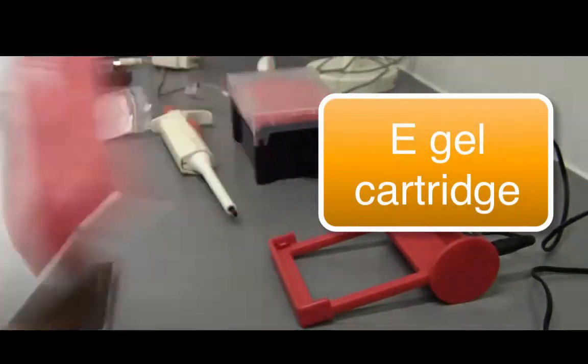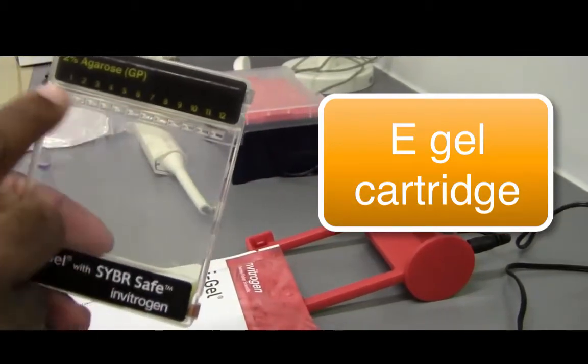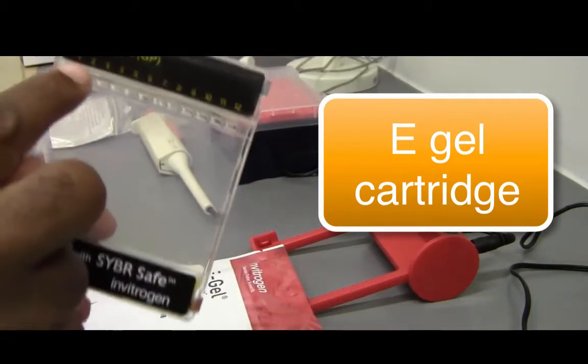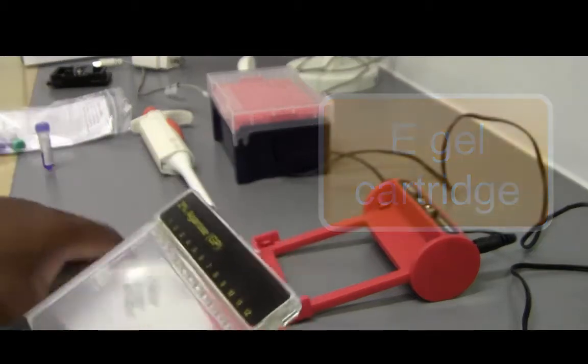You open it up, you'll see this is the gel. You'll see a little cover on top of here. You'll take that cover off and that will expose the wells and this is where you pipette into the wells.